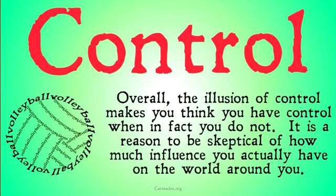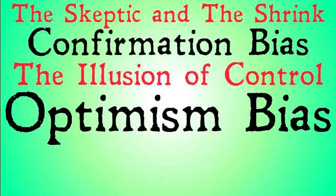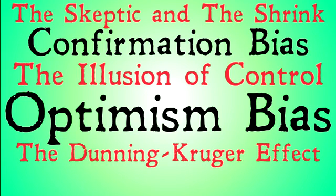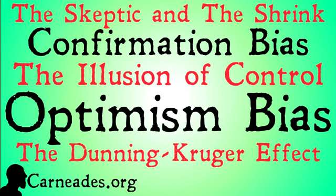Overall, the illusion of control makes you think you have control when in fact you do not. It is a reason to be skeptical of how much influence you actually have on the world around you. Next up, as I mentioned, we're going to be talking about optimism bias — the idea that you are kind of excluded from all of these bad things, or it's much less likely that these bad things would happen to you than to someone else. Then we'll talk about the Dunning-Kruger effect. Watch this video and more at carnades.org, and stay skeptical everybody.